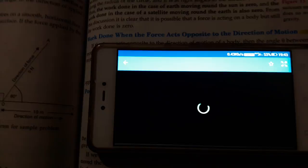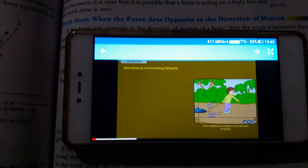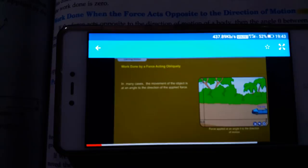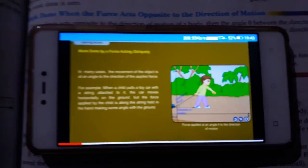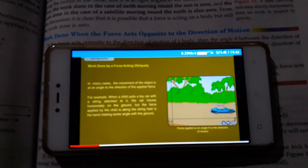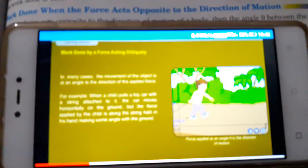Friend, this app is very useful. Work done by a force acting obliquely. In many cases, the movement of the object is at an angle to the direction of the applied force. For example, when a child pulls a toy car with a string attached to it, the car moves horizontally on the ground, but the force applied by the child is along the string held in his hand, making some angle with the ground.